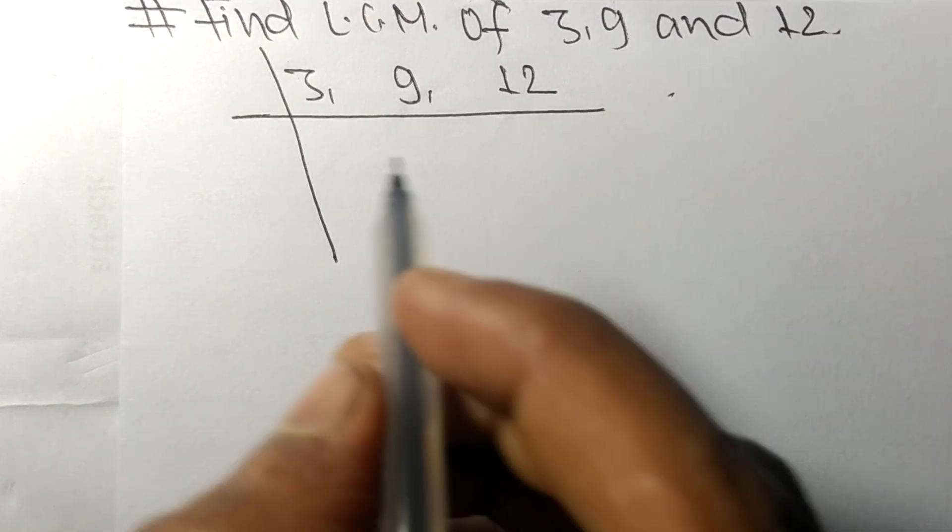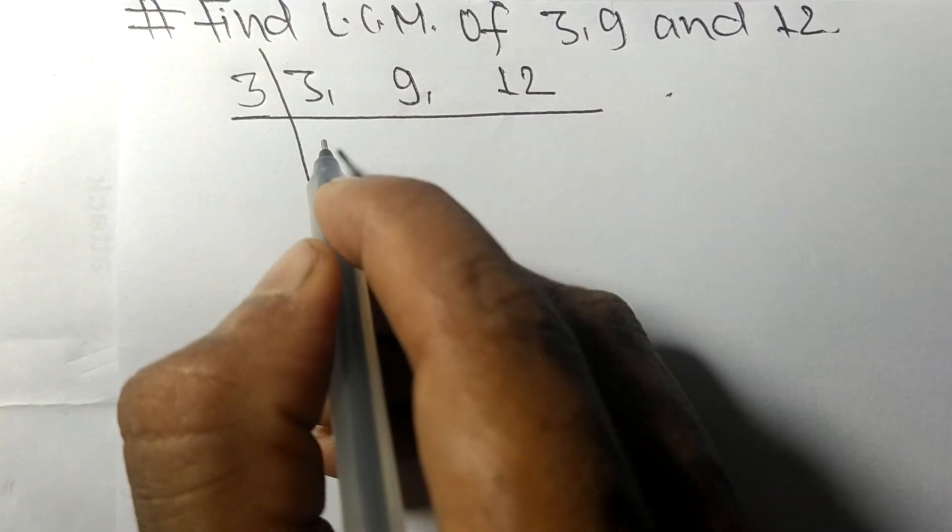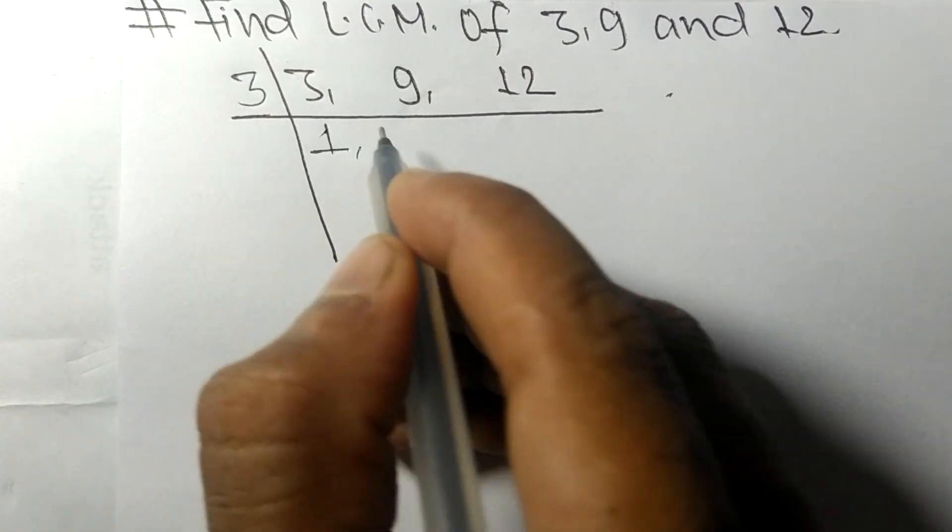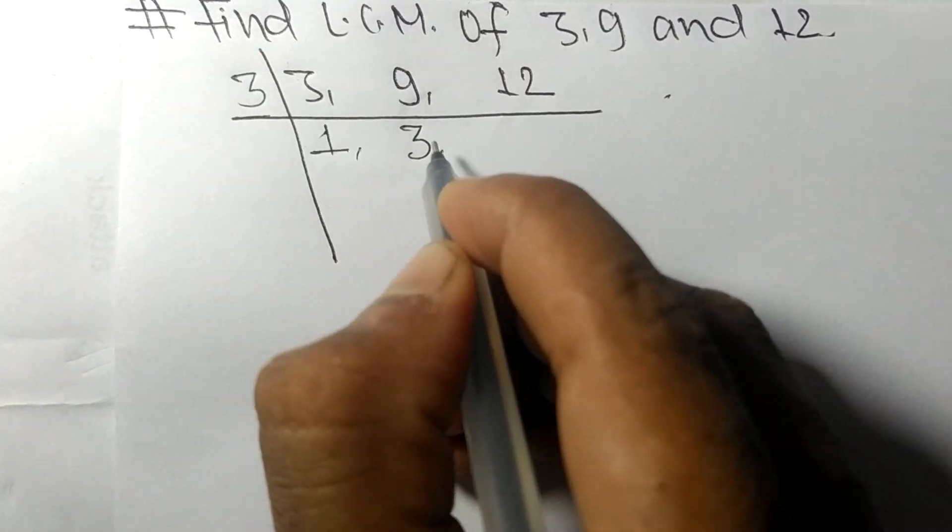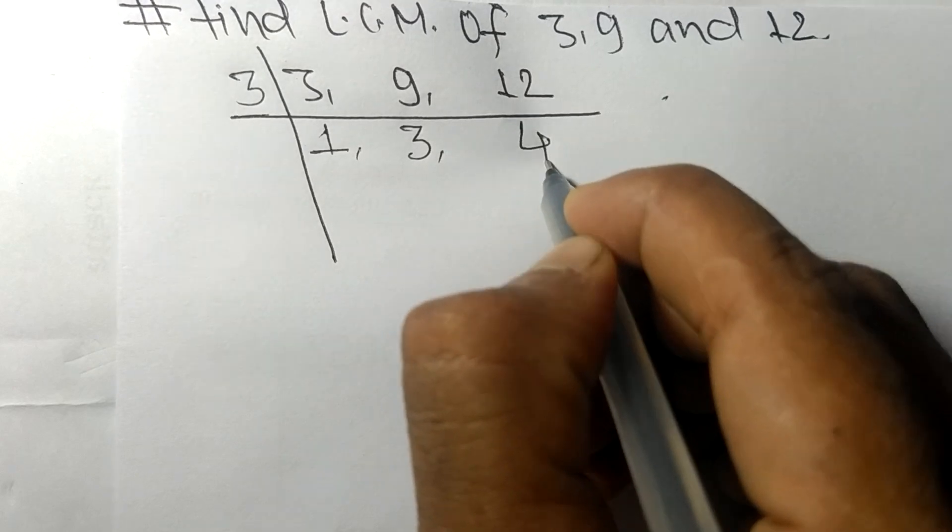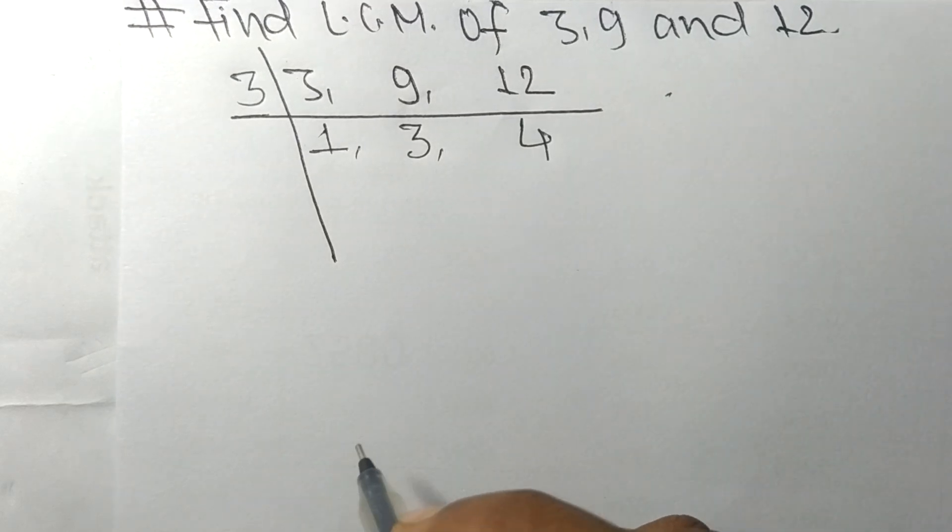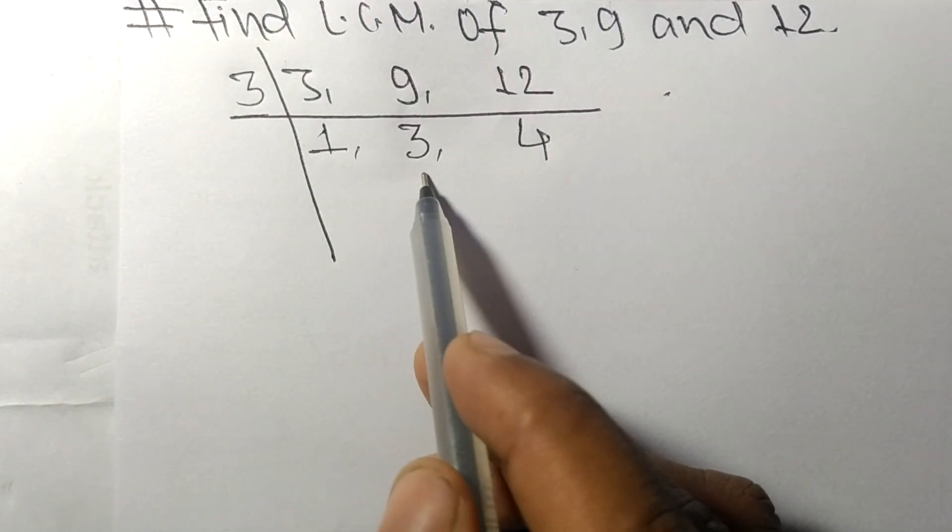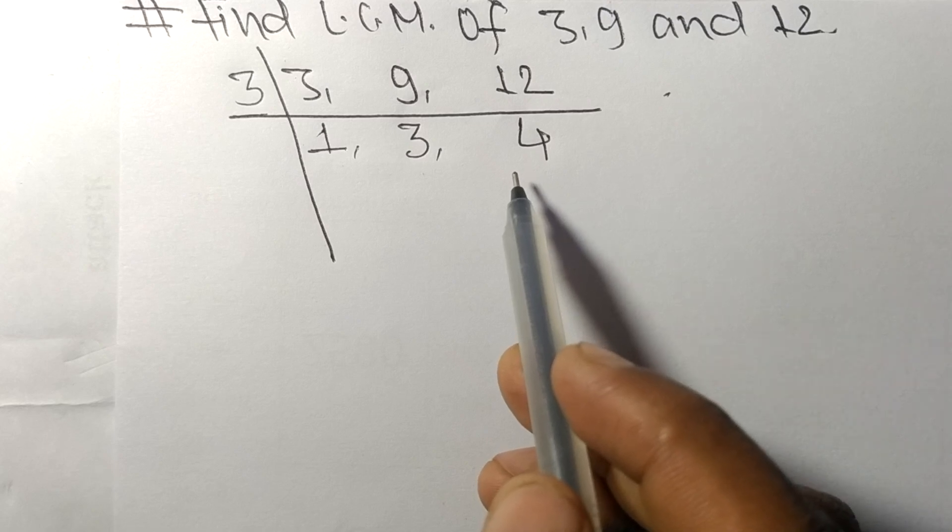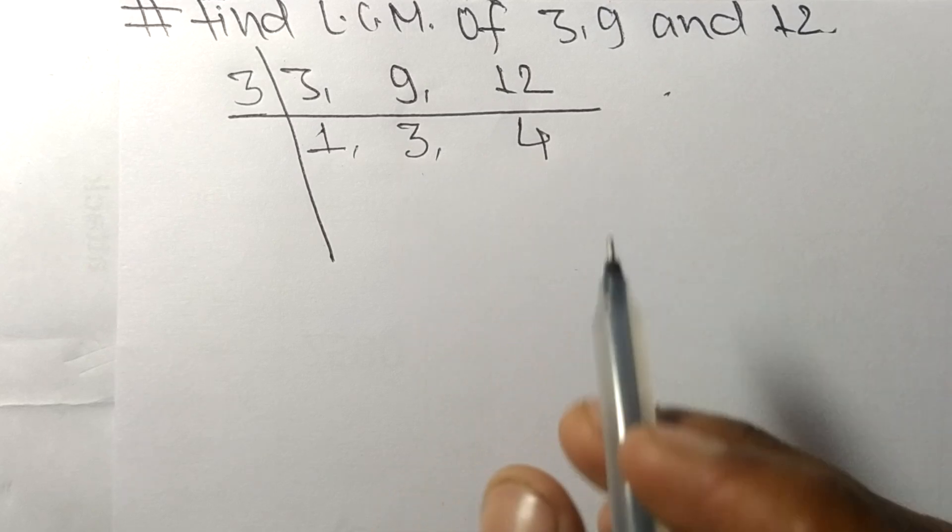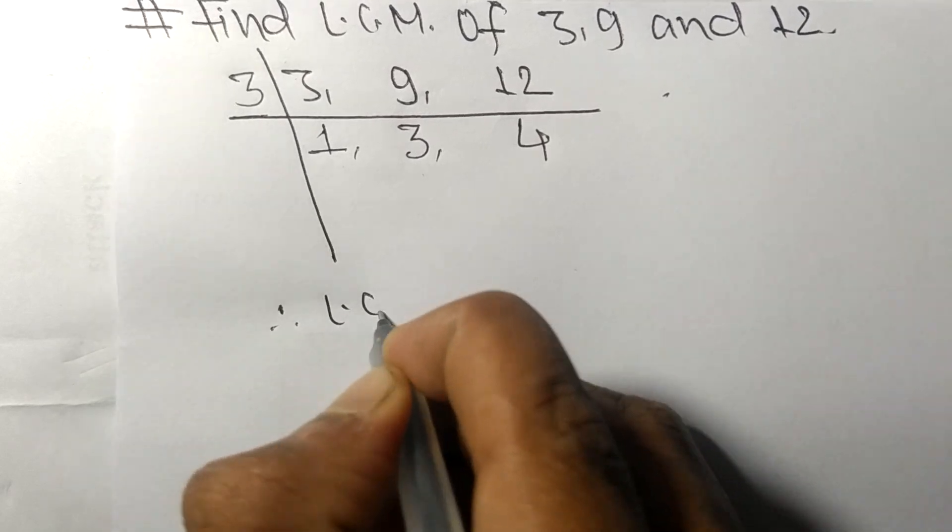These numbers are divisible by 3. 3 times 1 equals 3, 3 times 3 equals 9, 3 times 4 equals 12. So now we got 1, 3, and 4 which are not exactly divisible by any number.